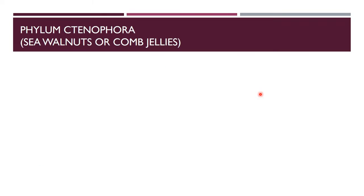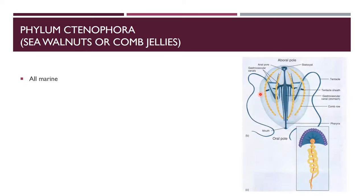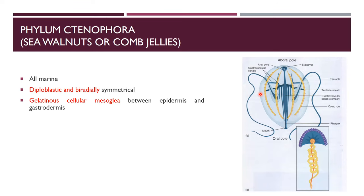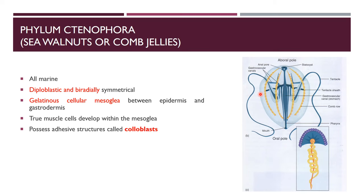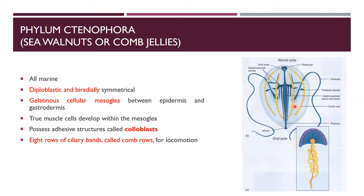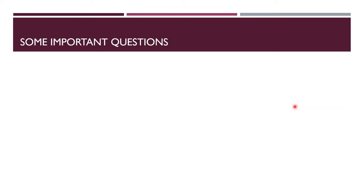Phylum Ctenophora, commonly known as sea walnuts or comb jellies, are all marine with diploblastic and biradial symmetry. They have gelatinous cellular mesoglea with true muscle cells. Adhesive structures called colloblasts and eight rows of ciliary bands called comb rows are present — four on the front and four on the back — used for locomotion.